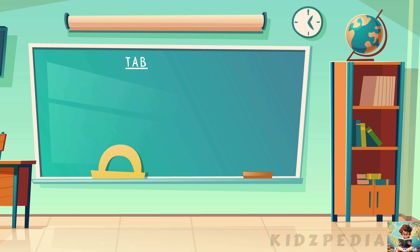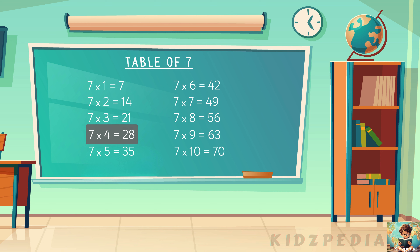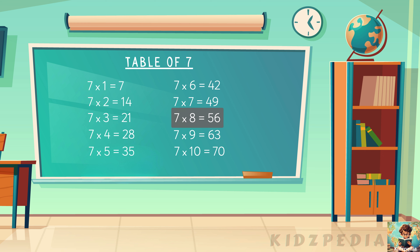Let's learn it one more time. 7 1s are 7. 7 2s are 14. 7 3s are 21. 7 4s are 28. 7 5s are 35. 7 6s are 42. 7 7s are 49. 7 8s are 56. 7 9s are 63. 7 10s are 70.